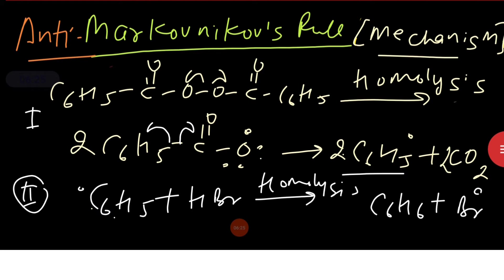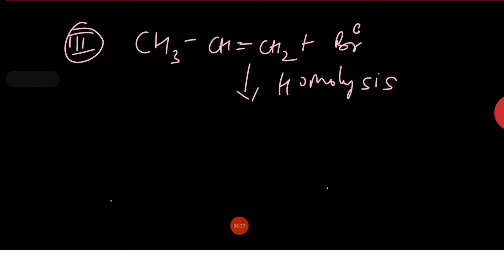benzoyl free radical. In the third step, attack of bromine free radical on unsymmetrical alkene, for example propene, in this case occurs.